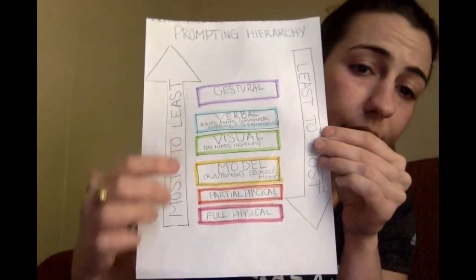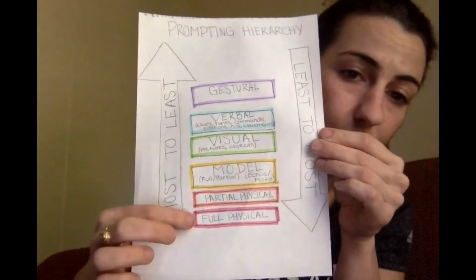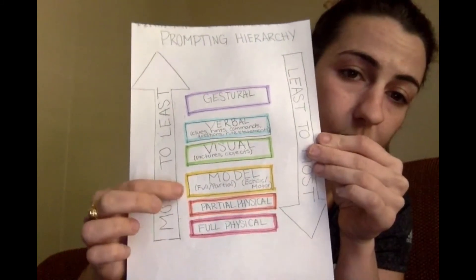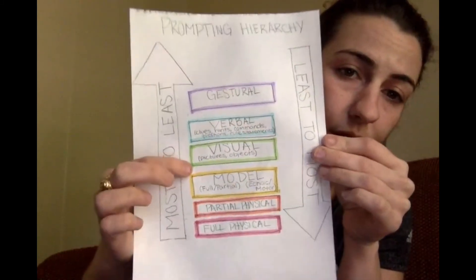So just once again, the most intrusive is full physical, then partial physical, model, visual, verbal, and gestural. And it is very important to prompt when working with children with autism to ensure that you provoke the expected response from the client.